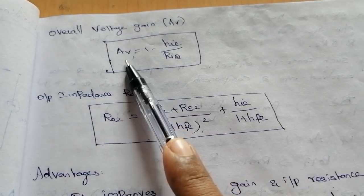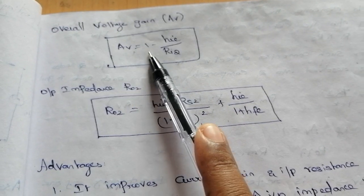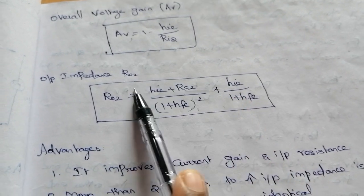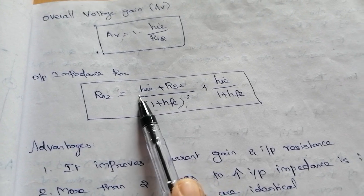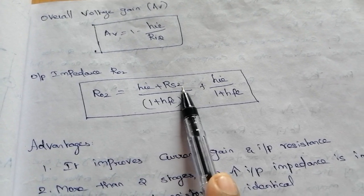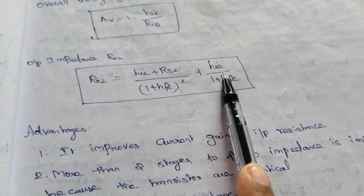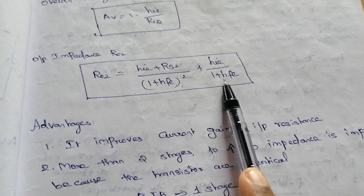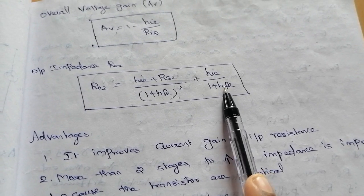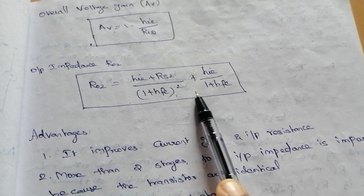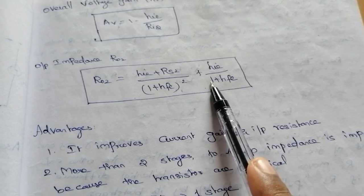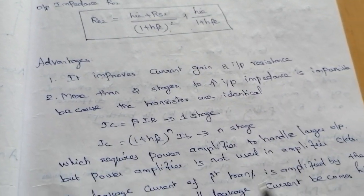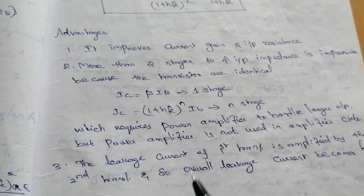The overall voltage gain AV equals 1 minus HIE/RI2. The output impedance R02 equals (HIE plus RS2) divided by (1 plus HFE) squared, plus HIE divided by (1 plus HFE). Combining the output resistance of both stage 1 and stage 2 gives the overall output resistance. These are the advantages of the Darlington amplifier — it improves current gain and input resistance.